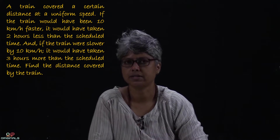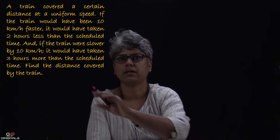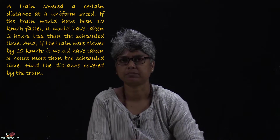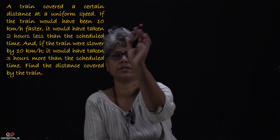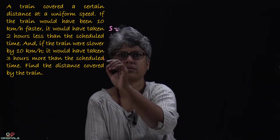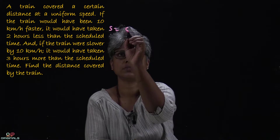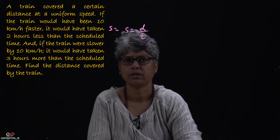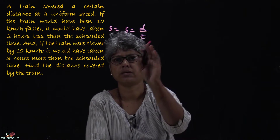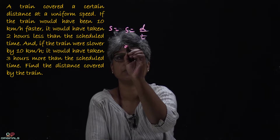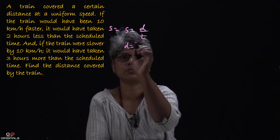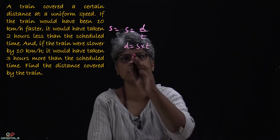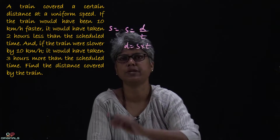We need to find the train's distance. Speed and time are given. Speed is equal to distance upon time, so distance will be equal to speed into time. We know that distance is equal to speed into time.